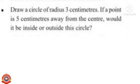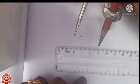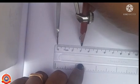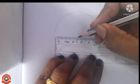Let's go to the next activity. Draw a circle of radius three centimeters. If a point is five centimeters away from the center, would it be inside or outside the circle? At first, mark the center of the circle, denoted as C. Take the ruler and compass, measure three centimeters in the compass. Fix the pointed end of the compass at the center, draw a circle around the center, and mark its radius by using a ruler.